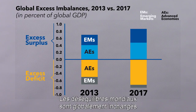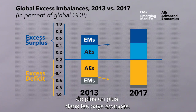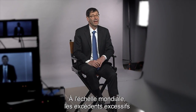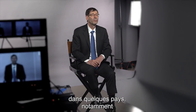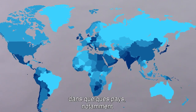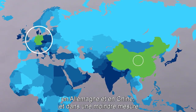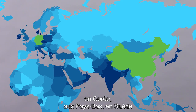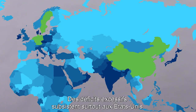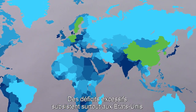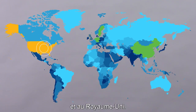While global imbalances remain broadly unchanged in recent years, they have become increasingly concentrated in advanced economies. From a global perspective, excess surpluses have been especially large and persistent in a small group of countries, most prominently in Germany and China, and to a lesser extent in Korea, the Netherlands, Sweden, and Singapore. Excess deficits remain mainly in the United States and the United Kingdom.